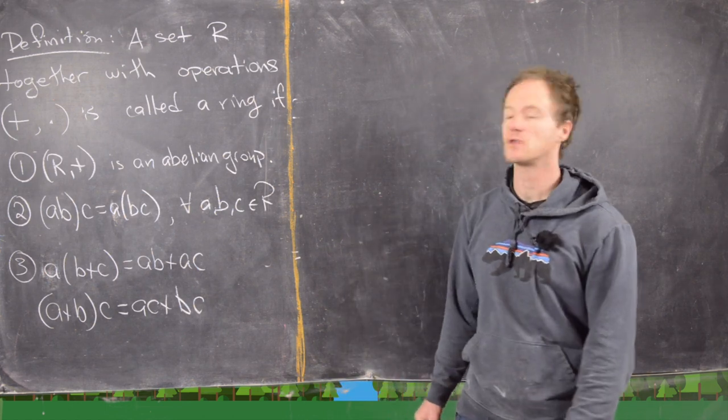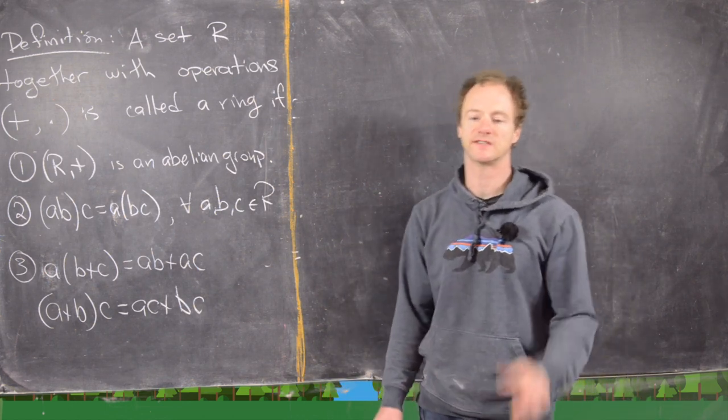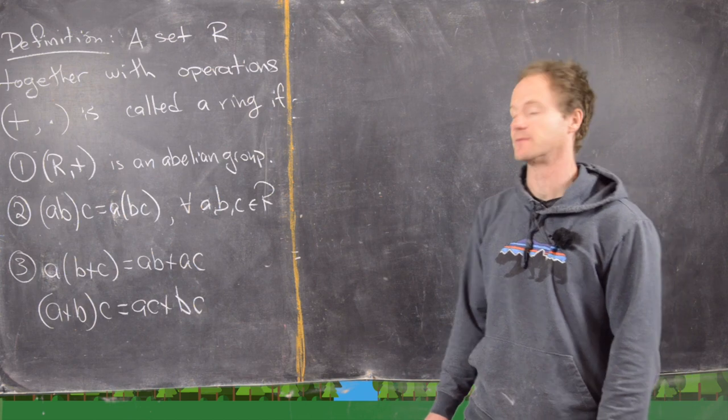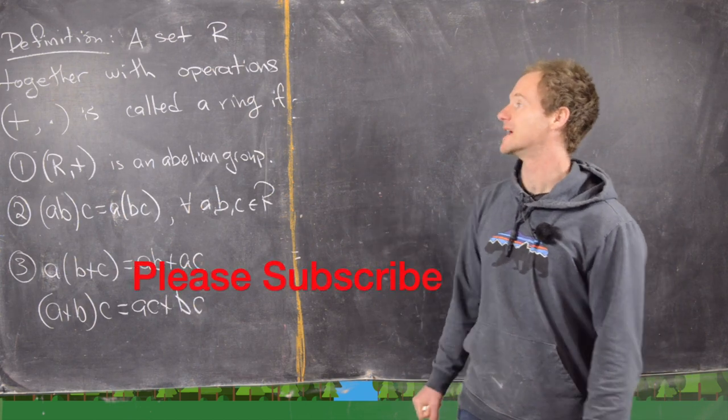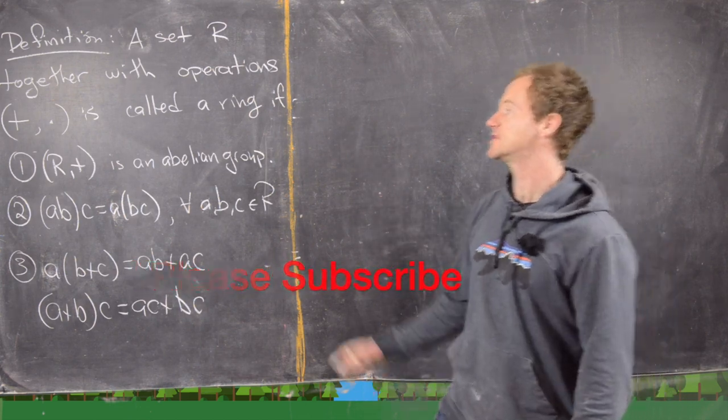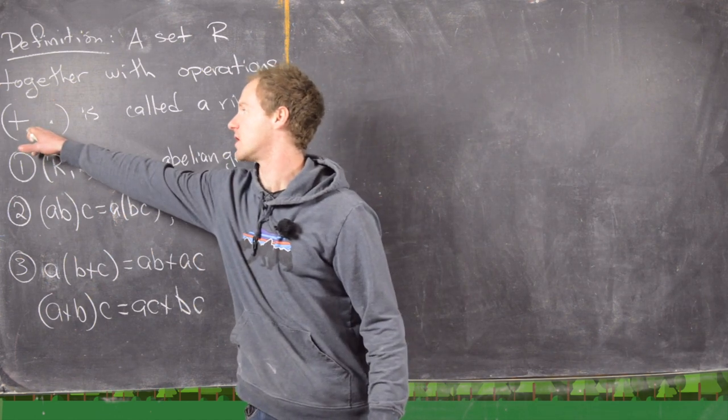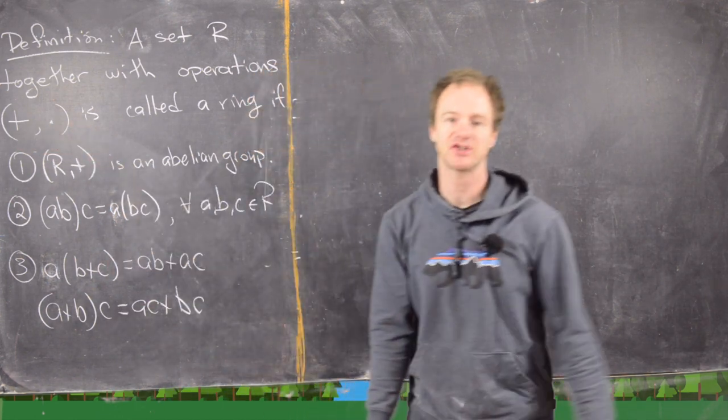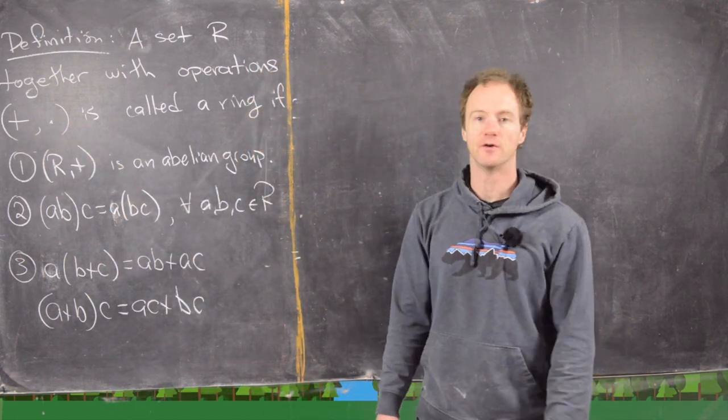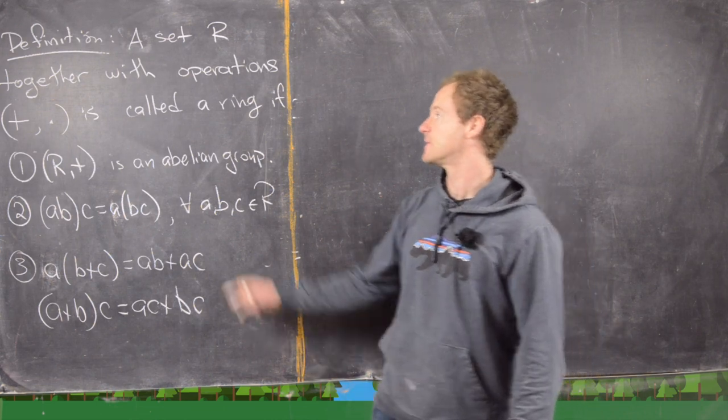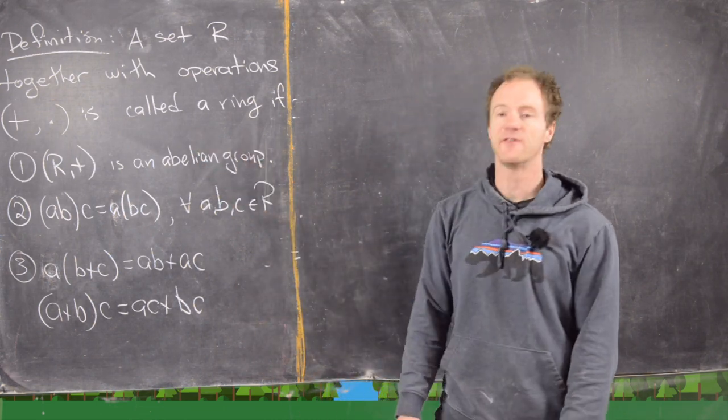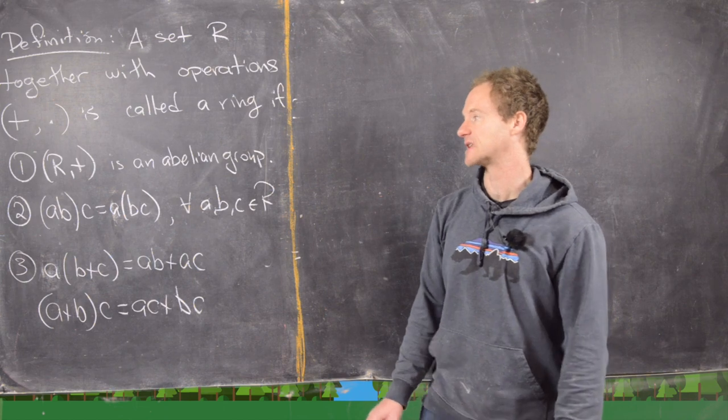In this video we want to start looking at the notion of a ring, and so we'll start with the definition and some examples. A set R together with two operations which we generally call addition and multiplication, although those may be generalized later, is called a ring if we have three things satisfied.